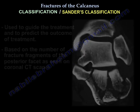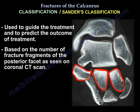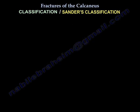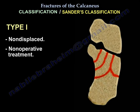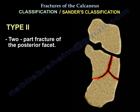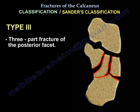The Sanders classification is used to guide treatment and predict outcome. It is based on the number of fracture fragments of the posterior facet as seen on coronal CT scan. Type 1 is non-displaced and treated non-operatively. Type 2 is a two-part fracture of the posterior facet. Type 3 is a three-part fracture of the posterior facet.